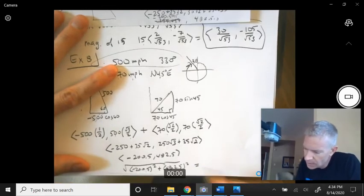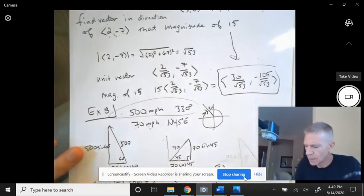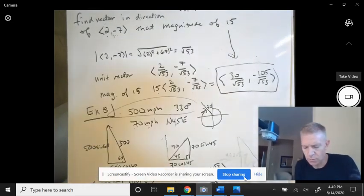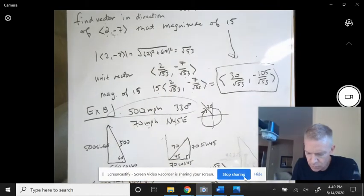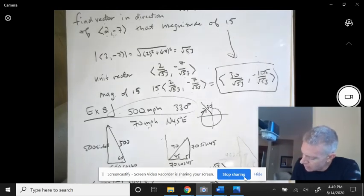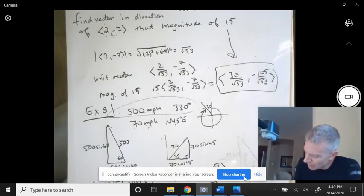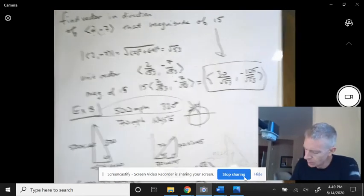All right, and that comes out to 522.5106 miles per hour. And if you wanted a direction, we would have to take this vector and draw it.